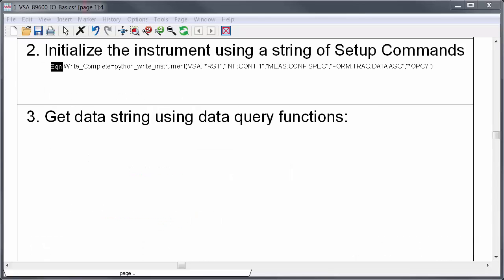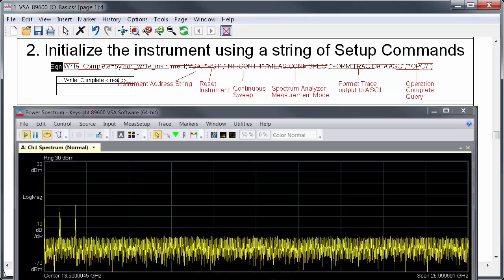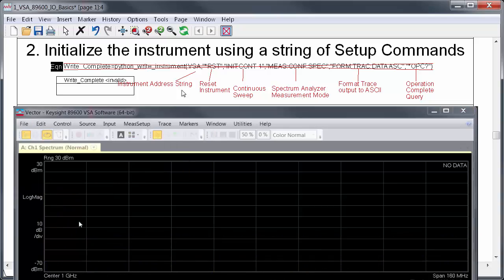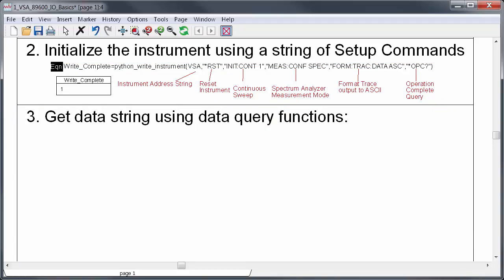Step two is to set up the VSA to do a virtual measurement by sending a string of SCPI commands to get to some desired starting state. To do that, use the python write instrument function. So for example, I want to reset the instrument, put it into continuous sweep spectrum analyzer mode, and set the trace data output to be ASCII. You might have a more complicated setup process. That's fine. You can append as many commands as you want to this equation, but I recommend always ending the write string with the operation complete query so that the equation will return one once this command list is executed. And just to show you that this is really doing something, let me bring up the VSA, and I'll reset it, and then rerun the equation in the data display. And you can see that enabling the equation does indeed configure the instrument.